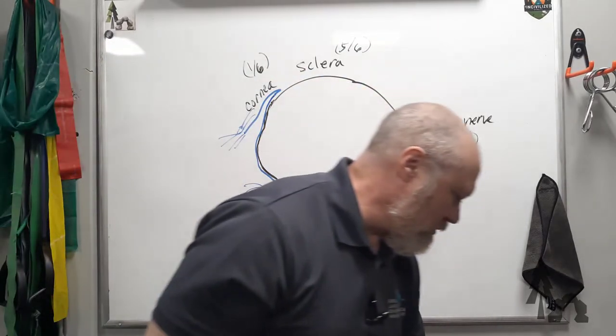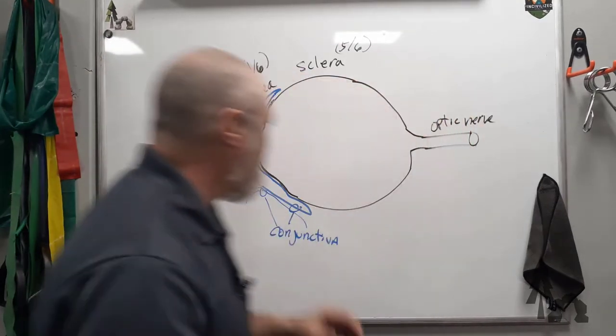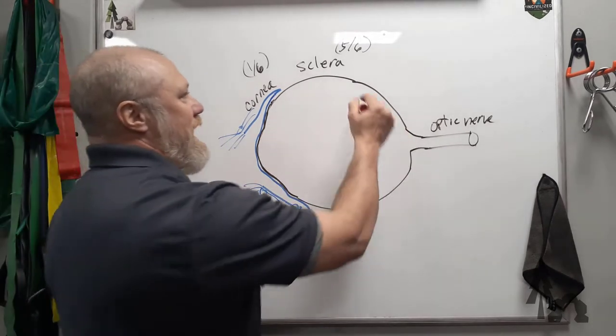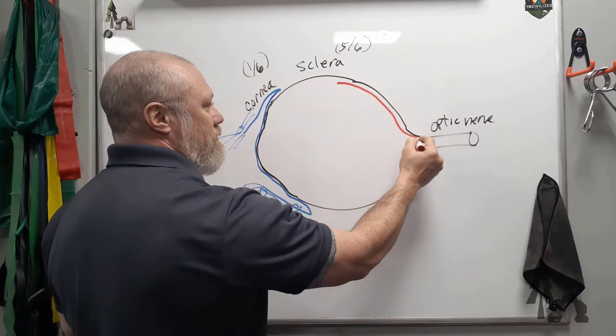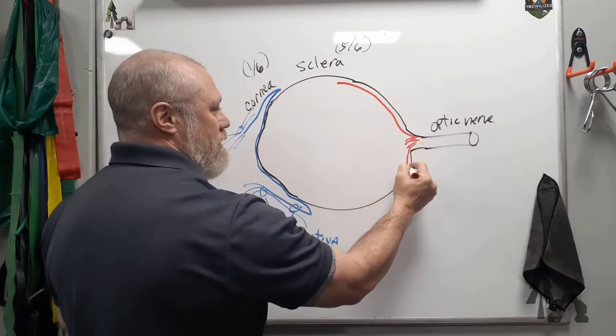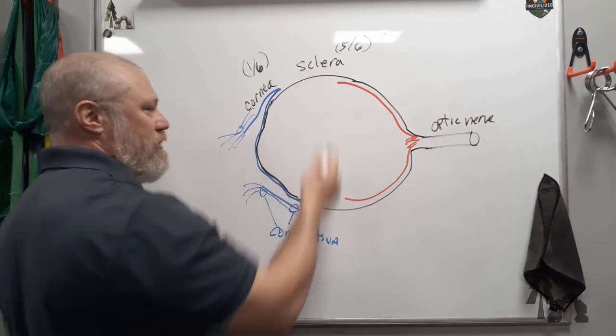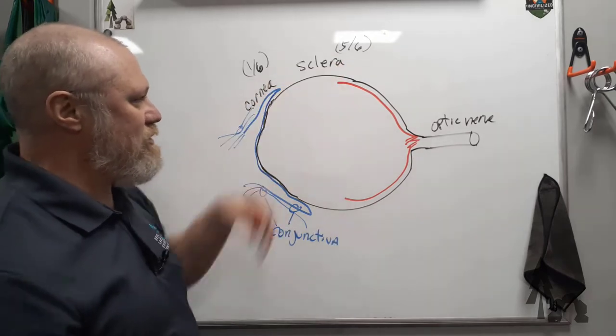But the internal anatomy of the eye. The posterior half or so of the eyeball, think of this as like a split cup, like a ball you cut. So we're just kind of looking at this in a sagittal plane.